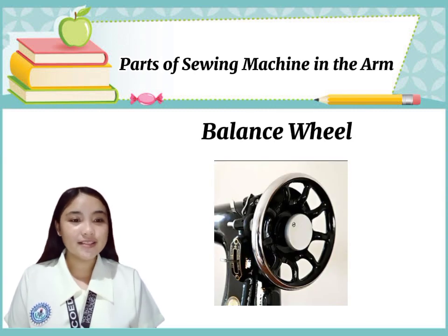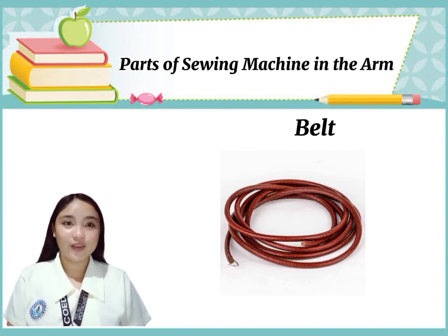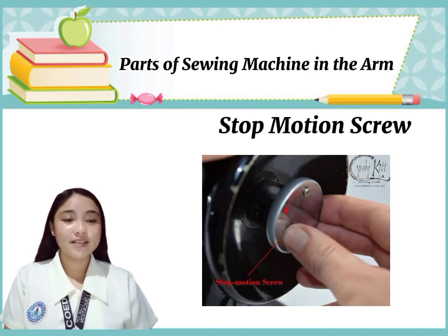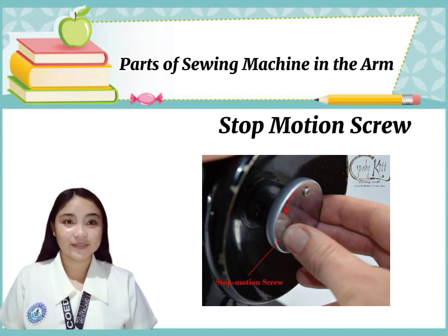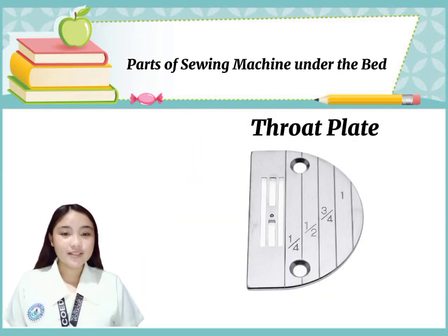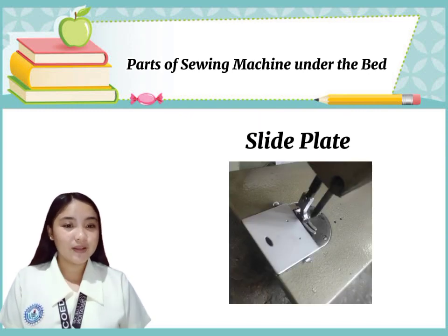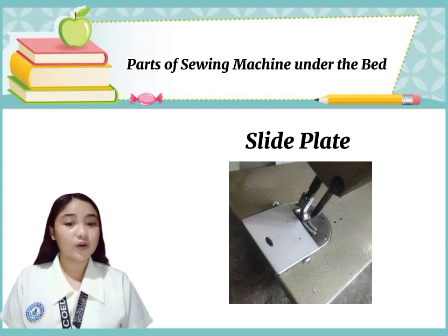Balance wheel sets the mechanism in motion. Belt connects the balance wheel to the drive wheel. Stop motion screw hinders moving when loose and starts it when tightened. Parts of the sewing machine under the bed: first, throat plate — it is the window of the feed dog and where the bobbin threads come out. Slide plate — it is the movable plate that covers the shuttle and bobbin case.